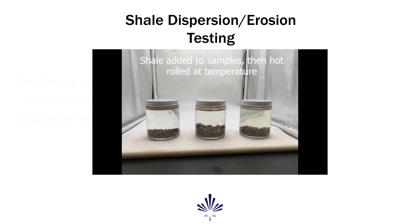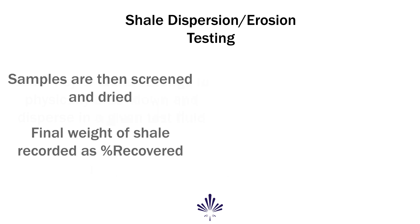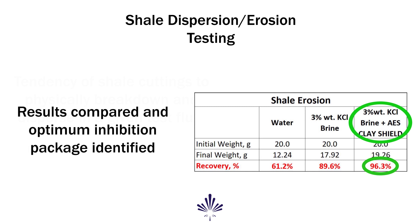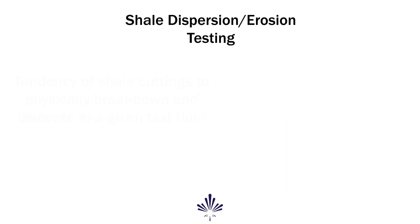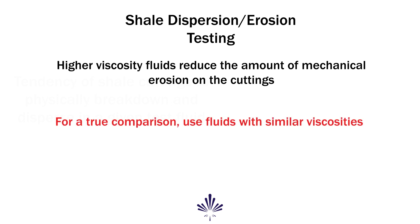The sample is then agitated at a set time and temperature, typically in a roller oven. Afterwards, the shale cuttings are recovered and weighed to determine percent retention. It should be noted that the viscosity of a test fluid can influence the results of this test. Higher viscosity fluids will reduce the amount of mechanical erosion seen by the cuttings while being agitated. When running comparative testing, it is important that fluids have similar viscosities.